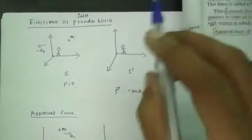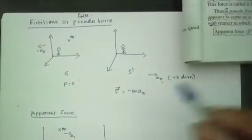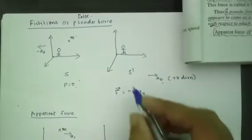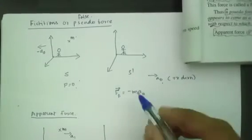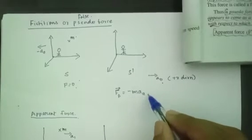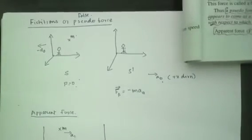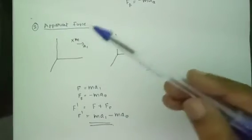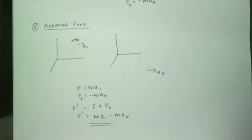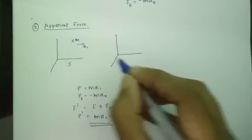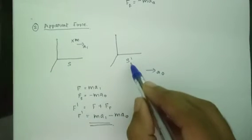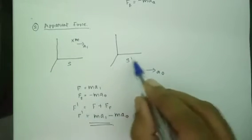Conceptually, there is a relation with pseudo force. We represent it as FF, where FF is equal to minus mA0. This is the apparent force. What we need to consider is the S frame and the S' frame — S' is moving with an acceleration A0.